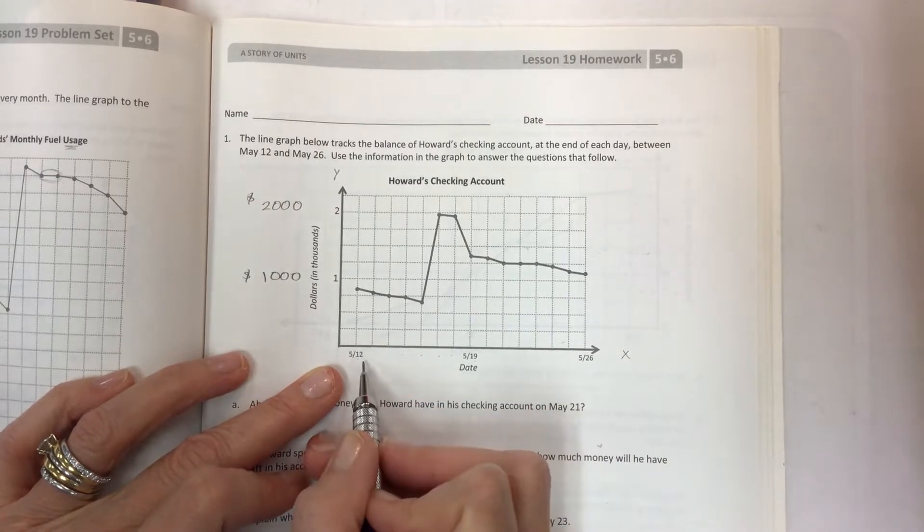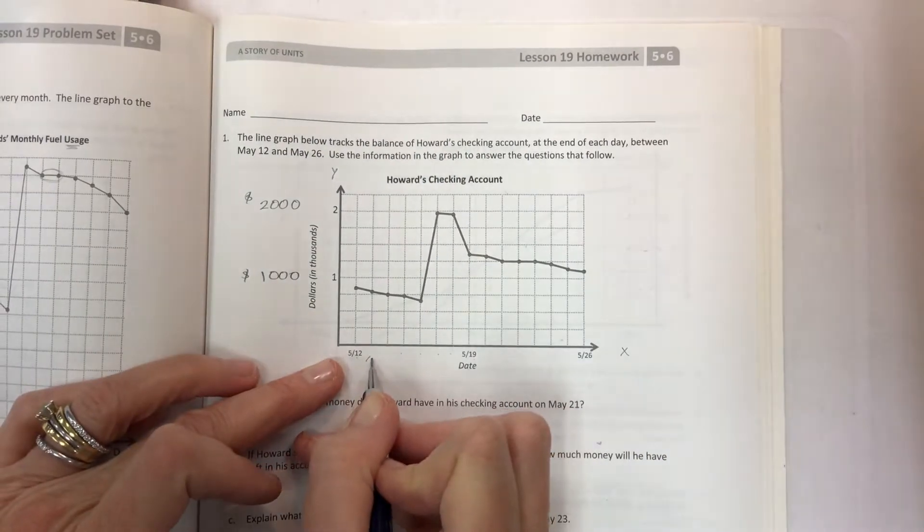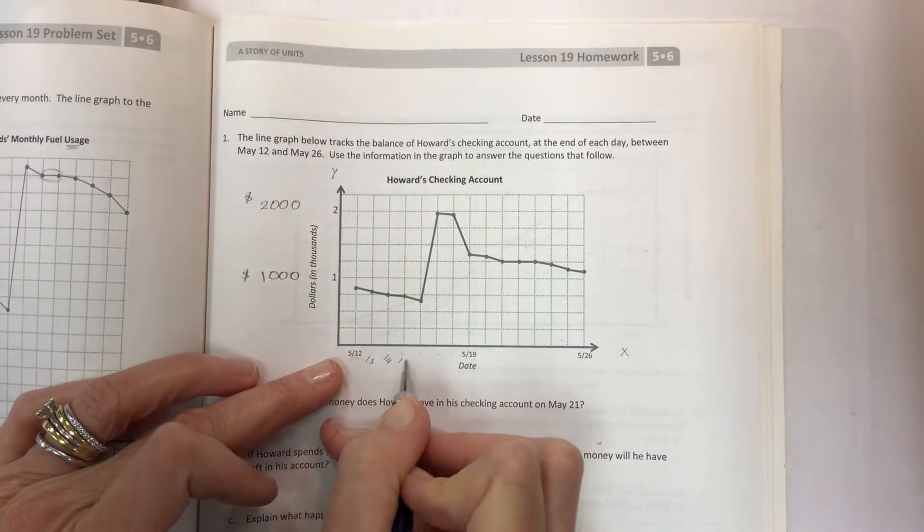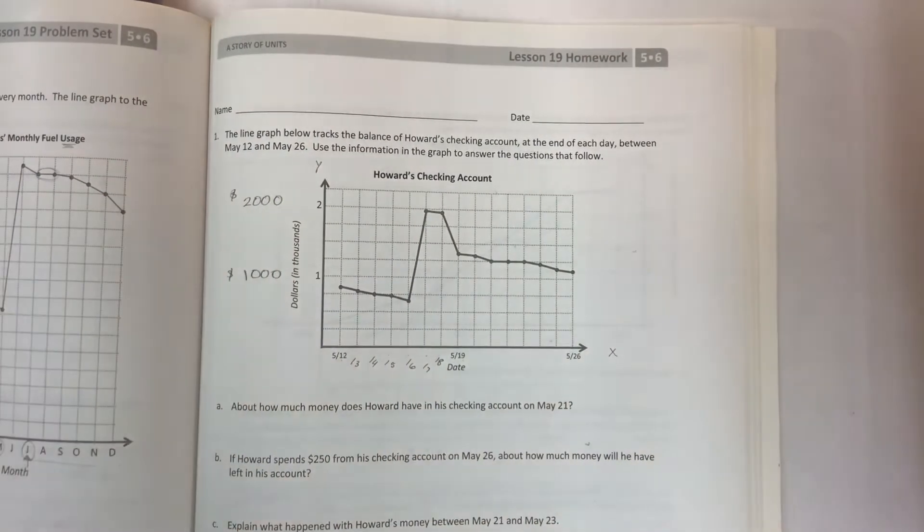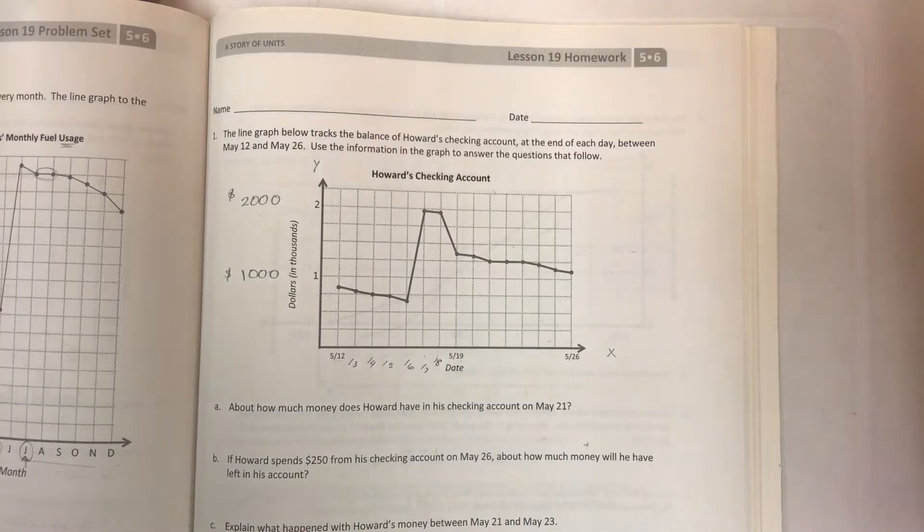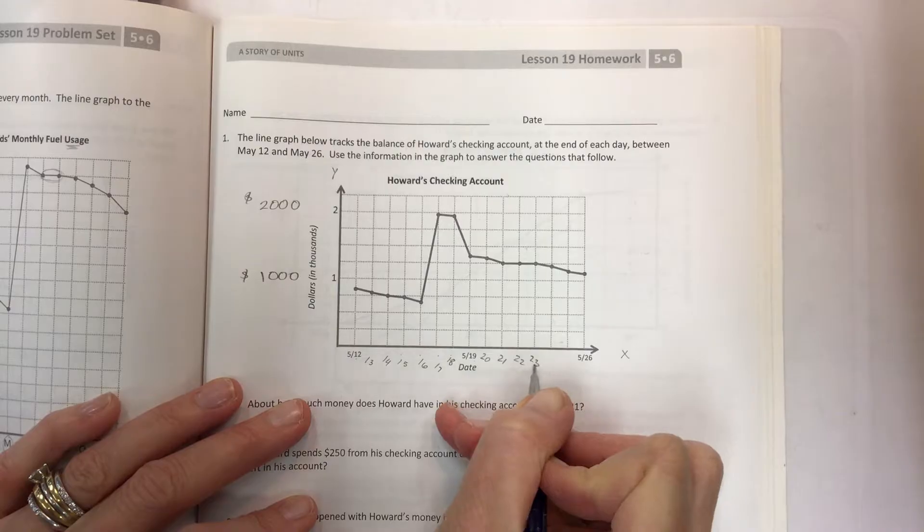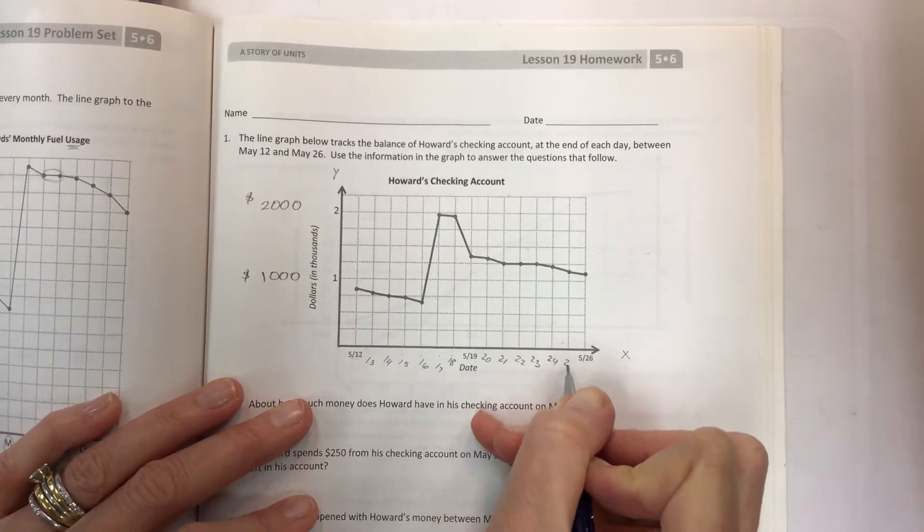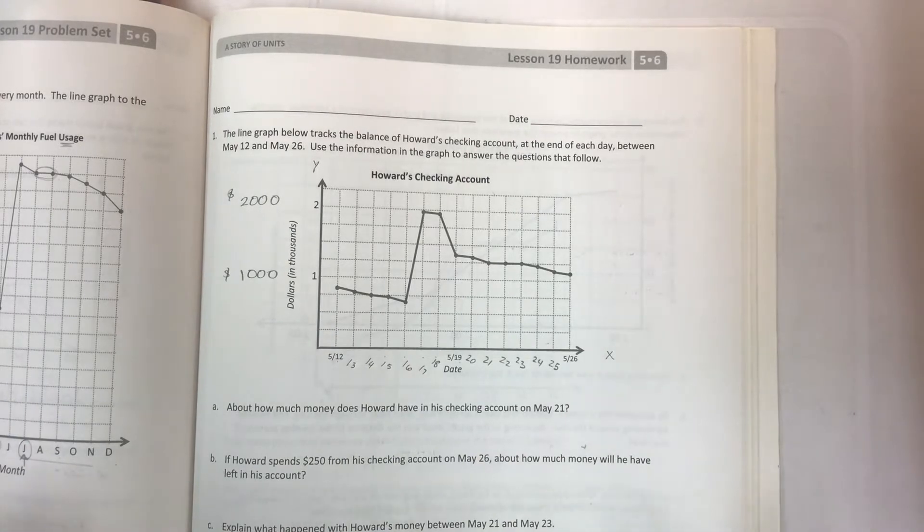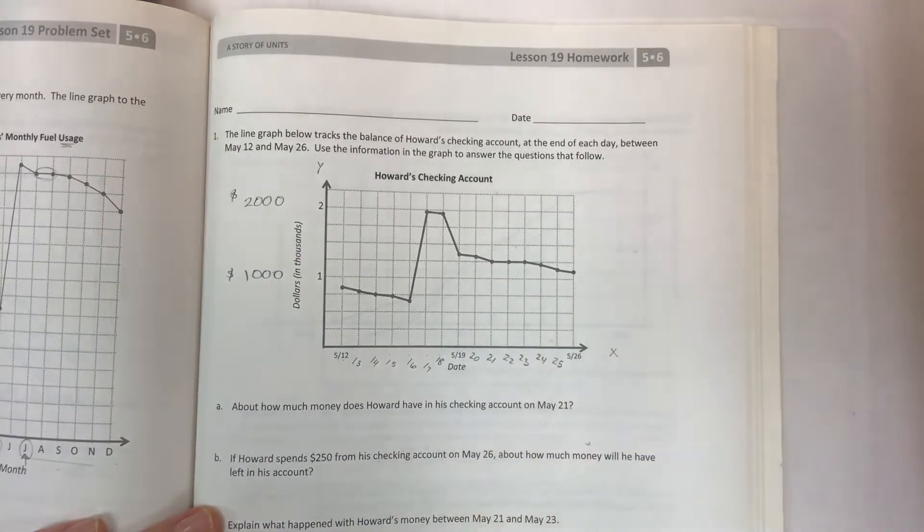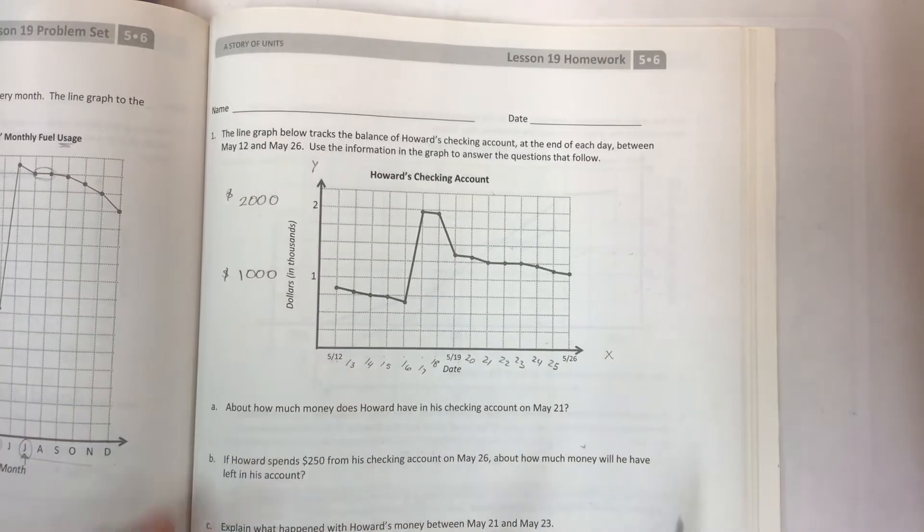Each one represents a day. Now, these are all May, so I'm not going to bother putting a 5. 5/12, 5/13, 14, 15, 16, 17, 18. It just helps you make sure you're on the right day. Many of these questions are asking you on a certain day or between which days, and you want to not be guessing. Fifth graders have a tough time with just a bunch of blank lines in between given data.